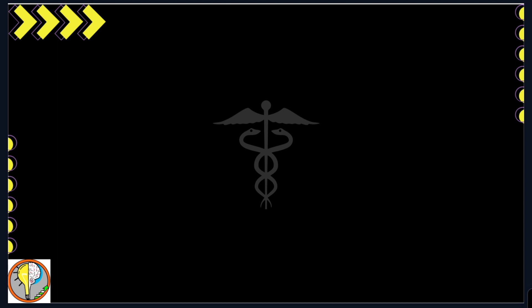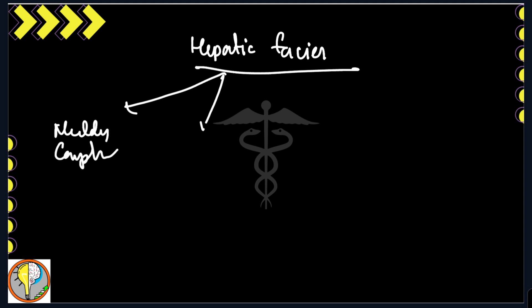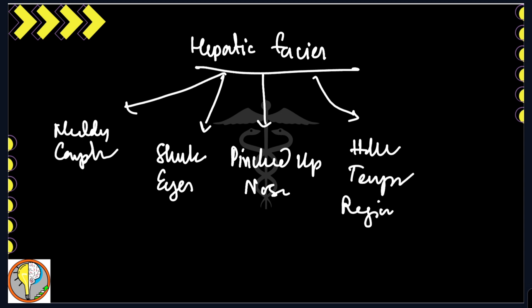Suppose in a patient of ascites, you can have hepatic facies. In this, you will have a kind of muddy complexion, sunken eyes, pinched up nose, hollow temporal vision, and also there is an icteric tinge in eyes. This is a typical finding in a patient of ascites and cirrhosis due to alcohol.